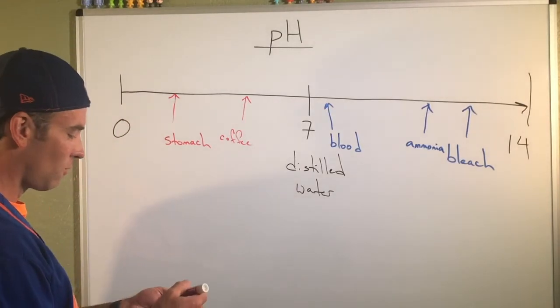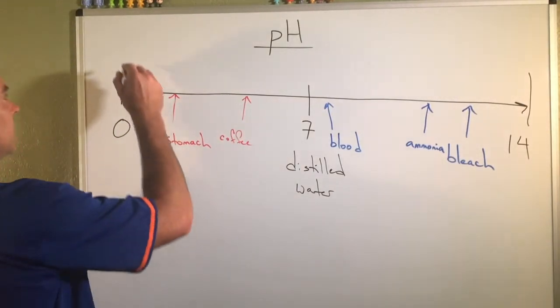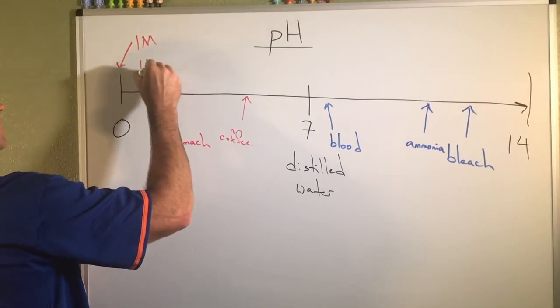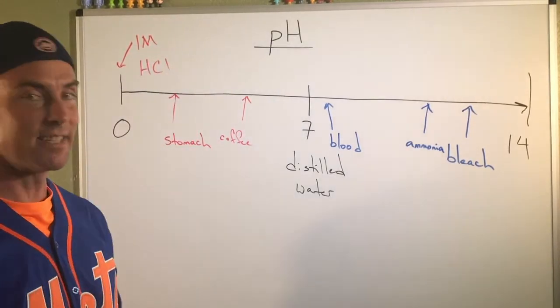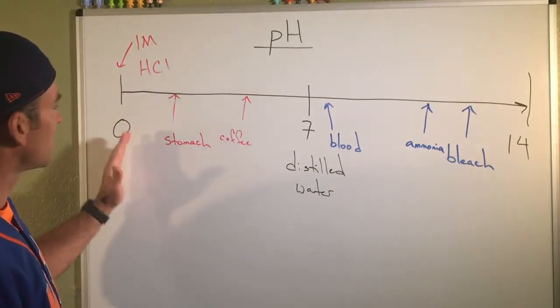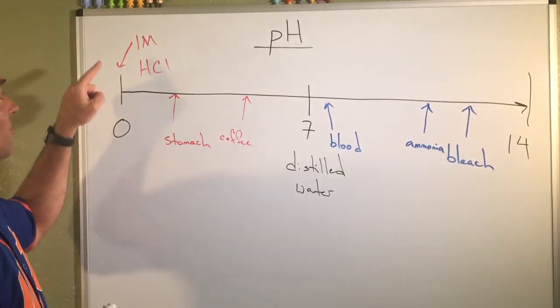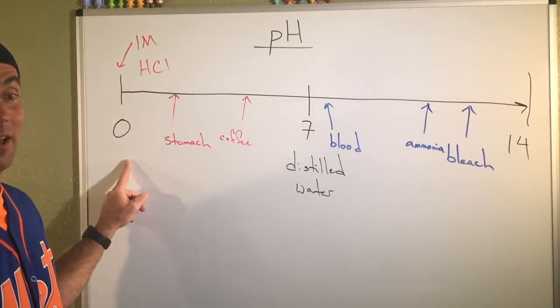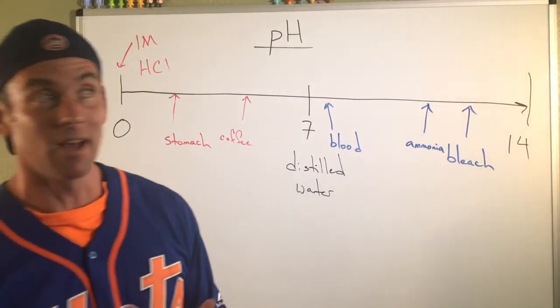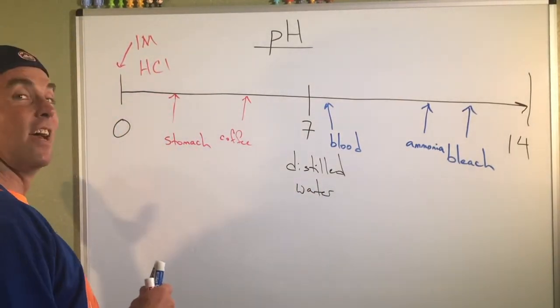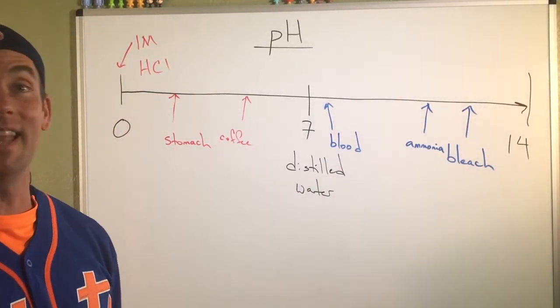That one molar HCl, that thing muriatic acid, which again, we use in the pool all the time, that's at a pH right around zero. The interesting thing you'll notice is that this is only for one molar HCl. You can actually get HCl up to 12 molar. And so it turns out you can actually fall off the end of this chart. You can actually end up with negative pHs.